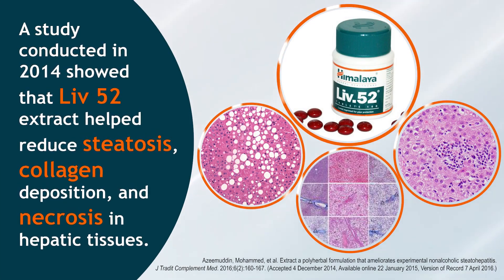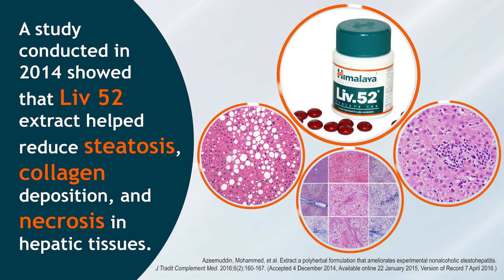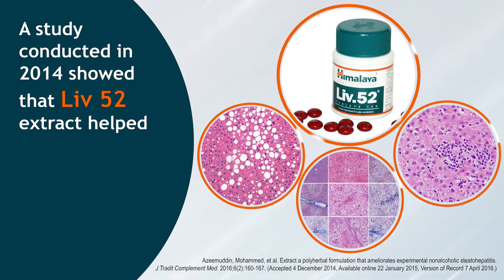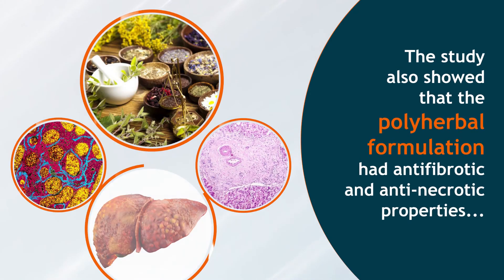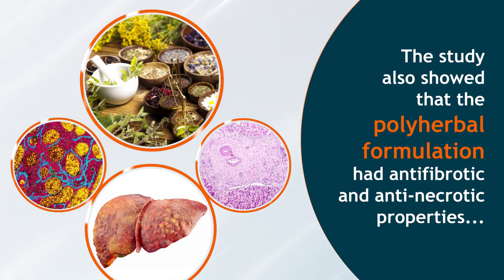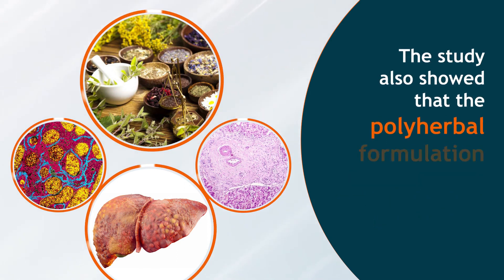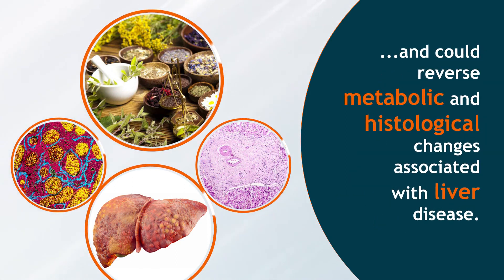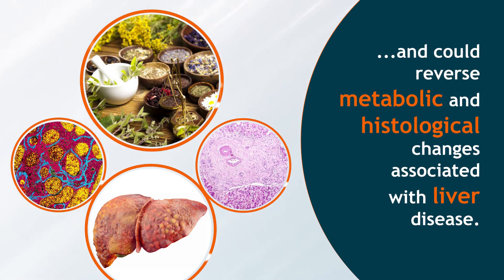A study conducted in 2014 showed that Live 52 extract helped reduce steatosis, collagen deposition, and necrosis in hepatic tissues. The study also showed that the poly-herbal formulation had anti-fibrotic and anti-necrotic properties and could reverse metabolic and histological changes associated with liver disease.